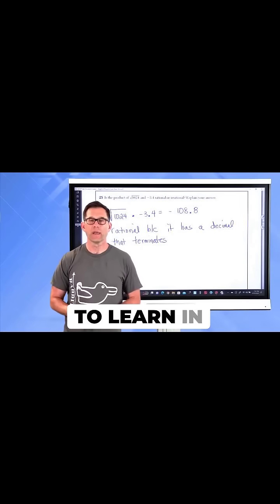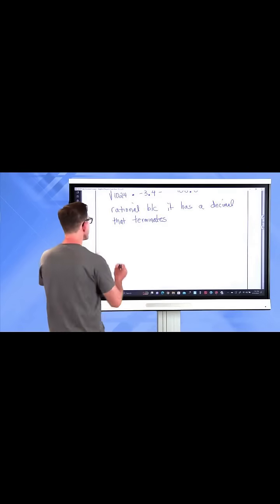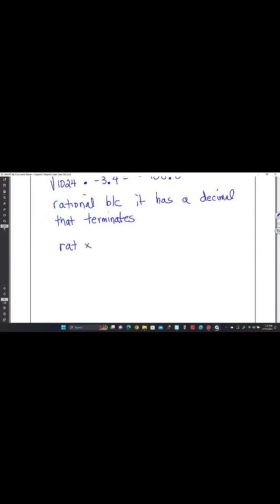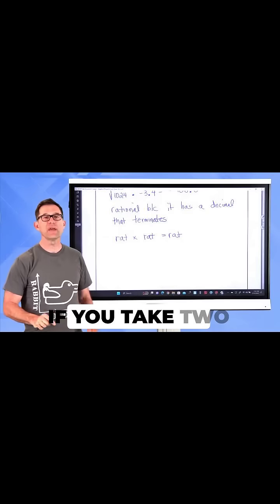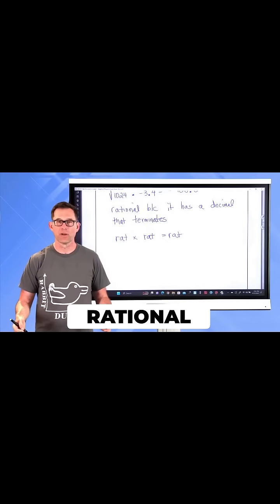There was something you were supposed to learn in Algebra 1 that said if you take a rational number times a rational number, you get a rational number. If you take two rational numbers and multiply them together, you get a rational number.